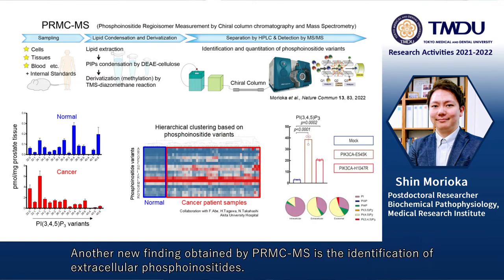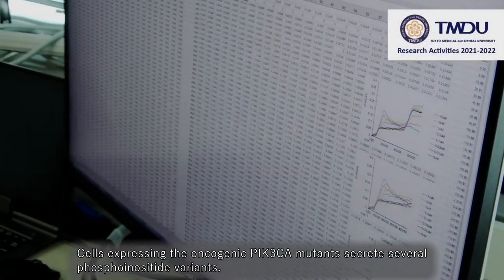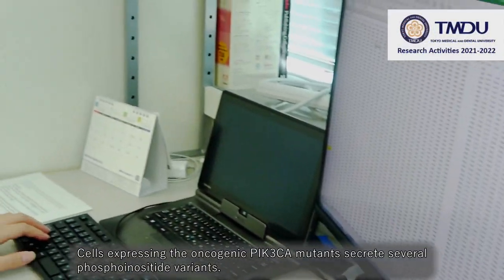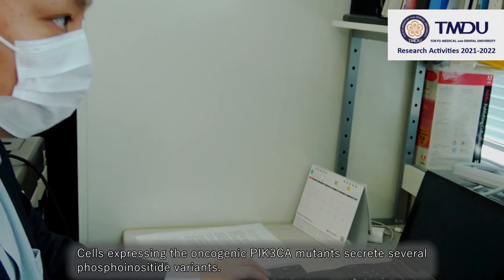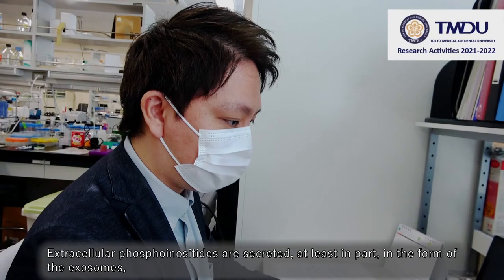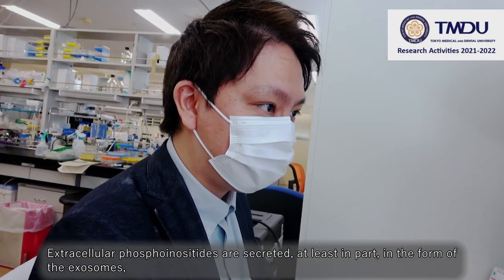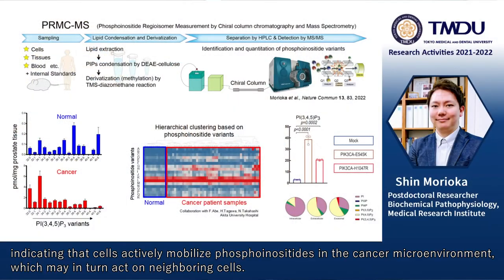Another new finding obtained by PALM-SIMS is the identification of the extracellular phosphoinositides. Cells expressing the oncogenic PIK3CA mutants secrete several phosphoinositide variants. Extracellular phosphoinositides are secreted, at least in part, in the form of exosomes,